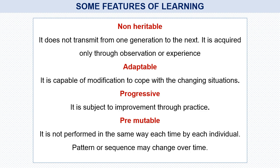Some features of learning: it is not heritable — it does not transmit from one generation to the next. It is acquired only through observation or experience. For example, the ability to speak is an innate type of behavior. On the other hand, the ability to speak a particular language like English or Hindi is a learned behavior, and this behavior does not transmit from one generation to the next.